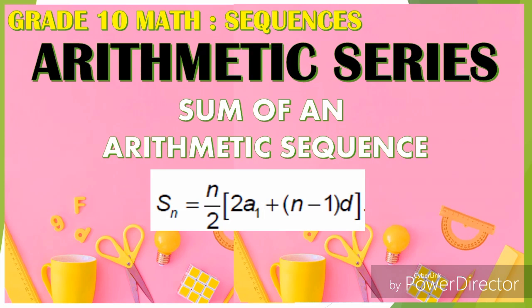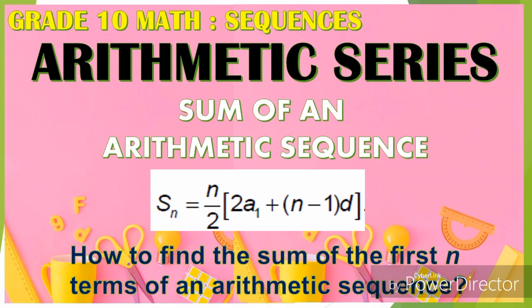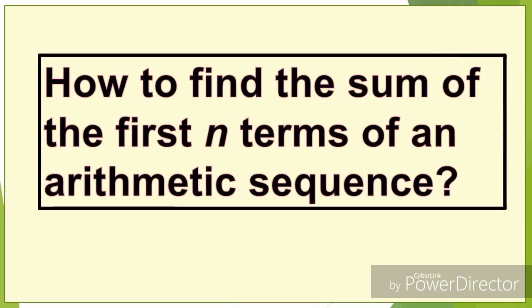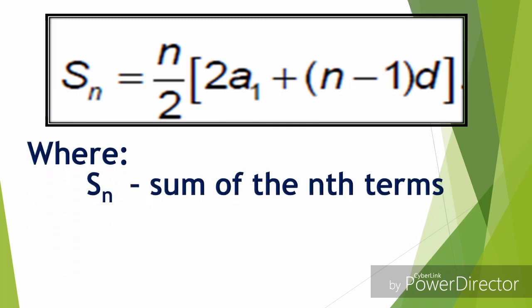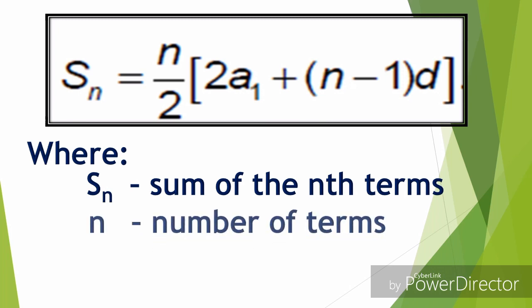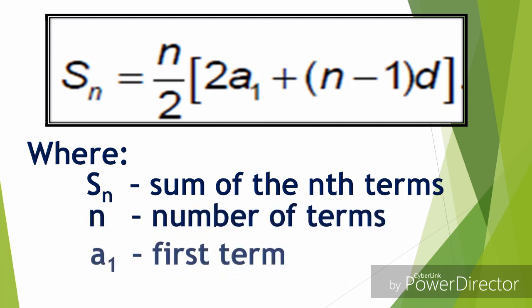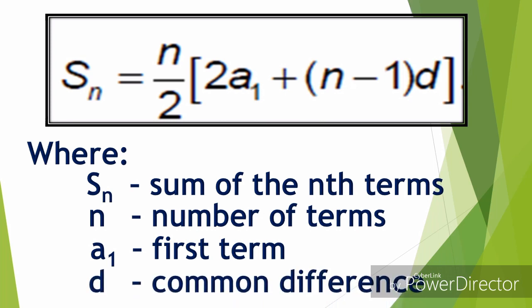In this lesson, we're going to learn how to find the sum of the n terms of an arithmetic sequence. We're going to use this formula: S of n equals n over 2 times 2 times a sub 1 plus n minus 1 times d. Where S of n is the sum of the n terms, n is the number of terms, a sub 1 is the first term, and d is the common difference.